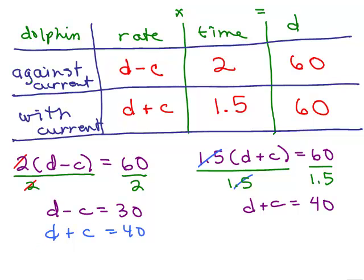the addition method is pretty simple here because the c's cancel and I have 2d equals 70 and now if we divide both sides by 2, we'll get d equals 35.